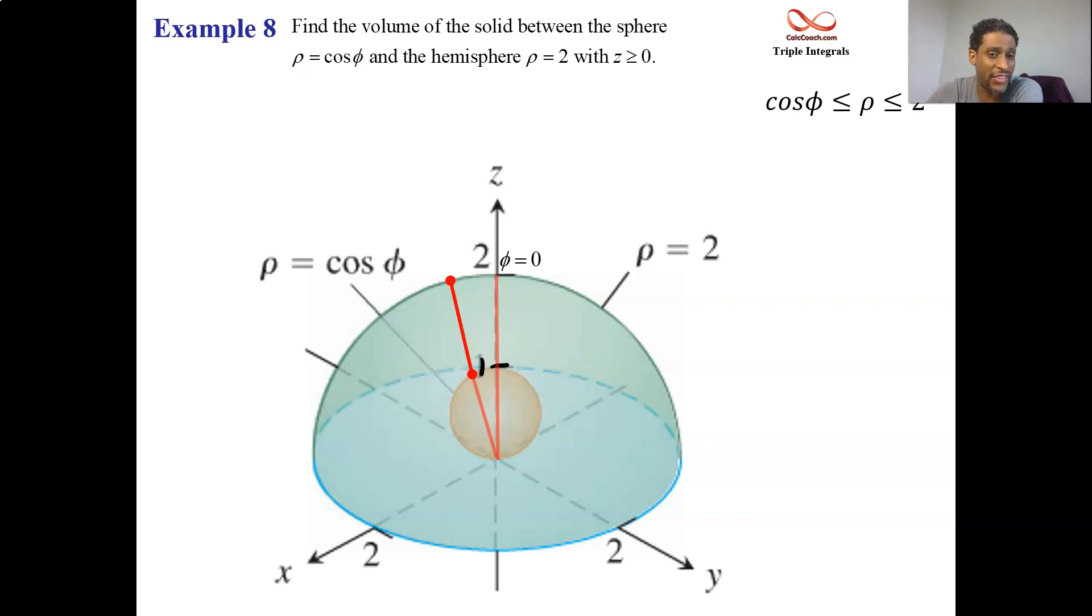What about the phi bounds? Phi starts at 0. And since we're talking about the xy plane, what does phi become? Pi over 2. When it comes to theta, of course, we're talking about all of theta, 0 to 2 pi. So our setup is rho between cosine phi and 2, phi between 0 and pi over 2, theta between 0 and 2 pi. It's a volume question. So there's a 1 on the inside. But from the Jacobian, we get rho squared sine phi.